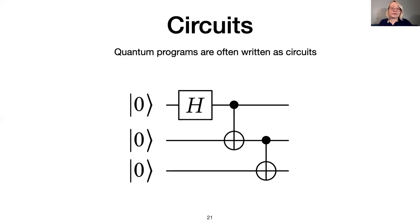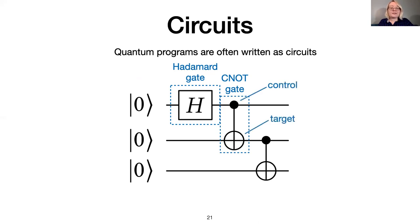Quantum programs are often written as circuits. On this slide is a circuit with three qubits and three gates, applied from left to right. On the left-hand side, we indicate that each input qubit is expected to be in the zero state. The boxed H represents a Hadamard gate on the first qubit, and the vertical line represents a CNOT gate.